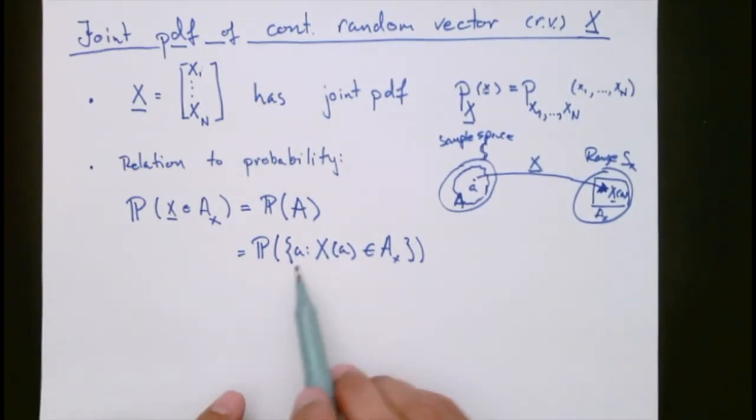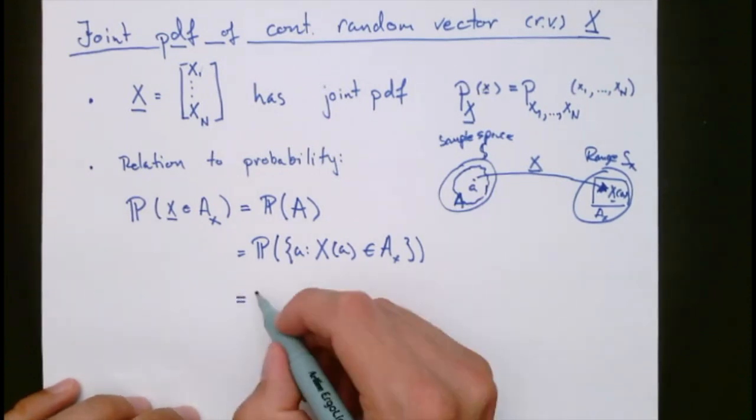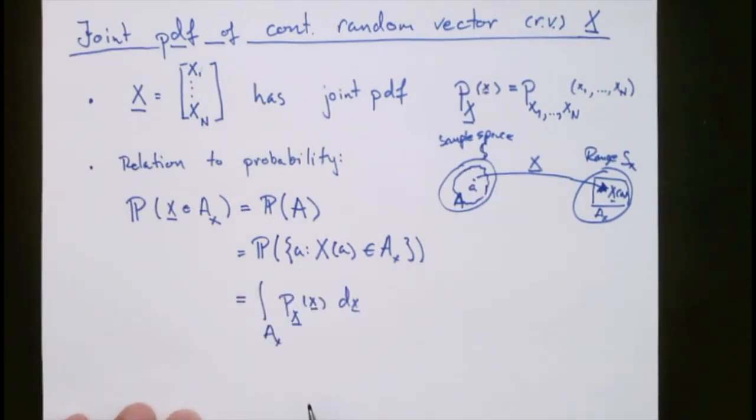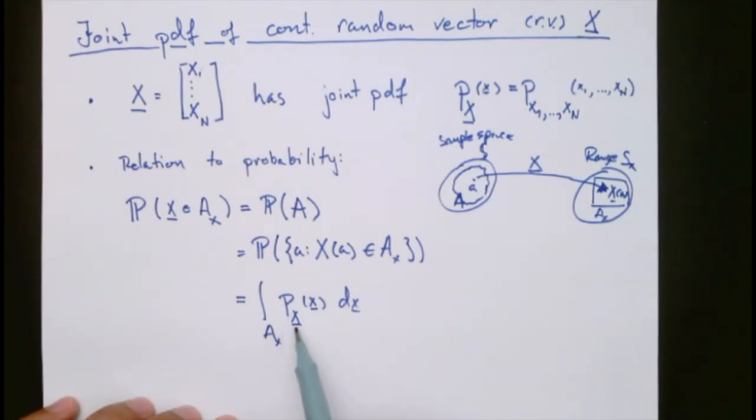Now we can define this in terms of the probability density function. So we can define this as this integral here where we integrate over the set Ax of this probability density function, the joint probability density function.